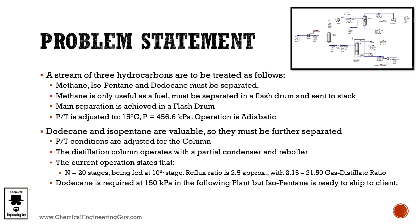This is the problem statement: a stream of three hydrocarbons are to be treated. We have an initial stream with three hydrocarbons — methane, isopentane, and dodecane, which are C1, C5, and C12. If you are experienced with these types of processes, you will know that this is relatively straightforward to separate.